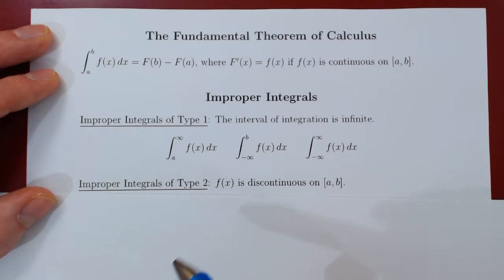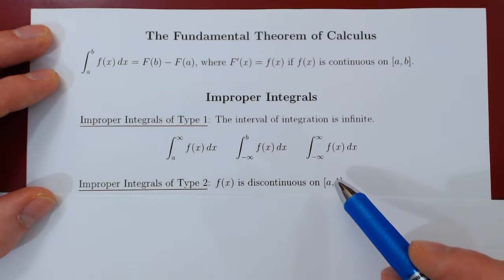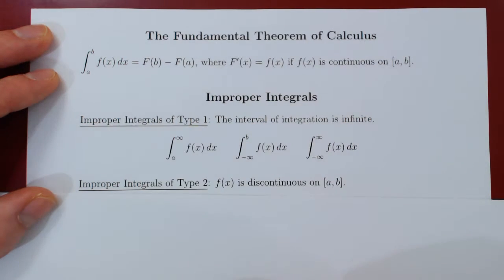Improper integrals of type two is where we allow the function now to have some point of discontinuity somewhere in a finite range of integration.